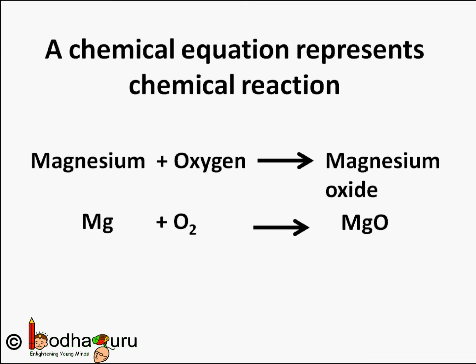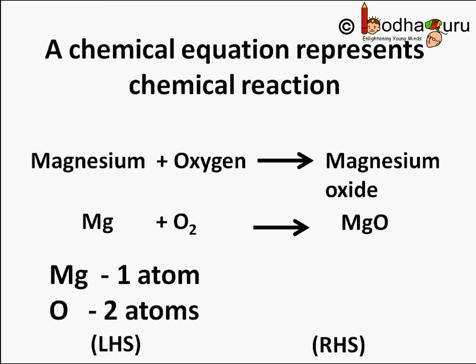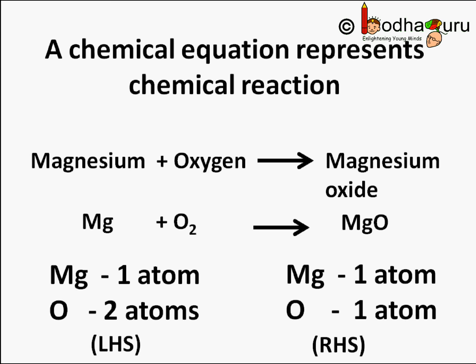Now let us count the number of atoms of each element before and after the reaction. Are the numbers of atoms of each element the same on both sides, that is on the LHS and the RHS? On the LHS we have magnesium: 1 atom, oxygen: 2 atoms. On the right hand side we have magnesium: 1 atom and oxygen: 1 atom. So we see the number of atoms are not the same on the LHS and RHS.